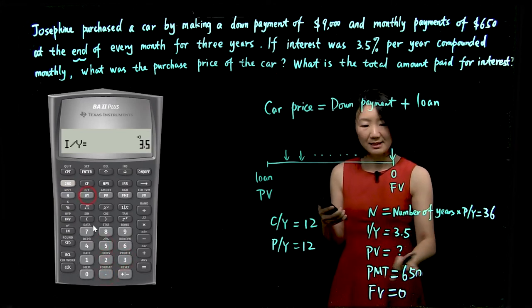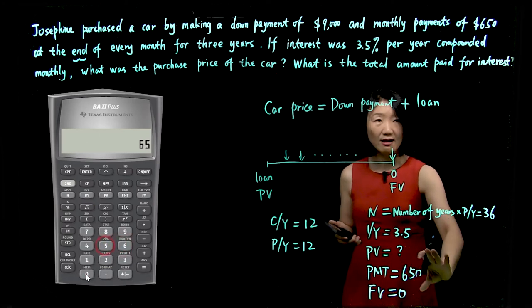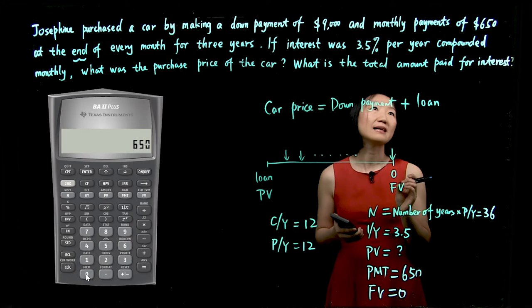PV is unknown. PMT is 650. So when we look at all these three variables, be careful with the sign.